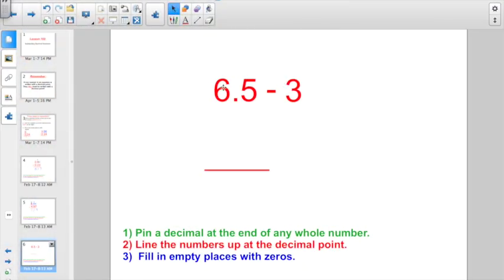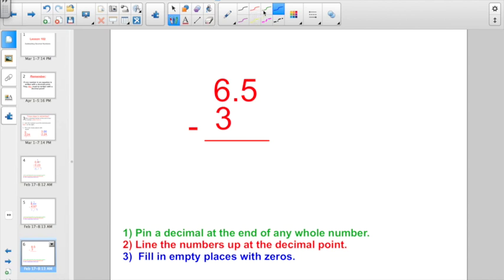Again, even though the book might have them listed out horizontally, we have to set them up vertically. There is no way we can be successful on these, trying to do them all in our head, if it's a borrowing problem. Let's go and pin a decimal point at the end of the whole number. Fill in empty places with zeros,